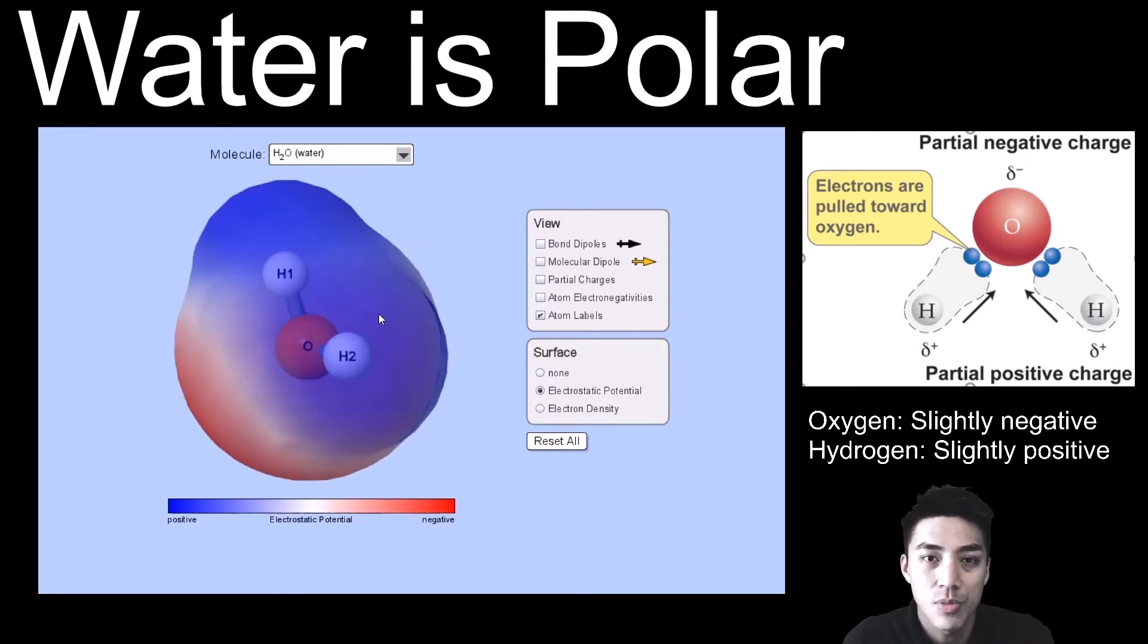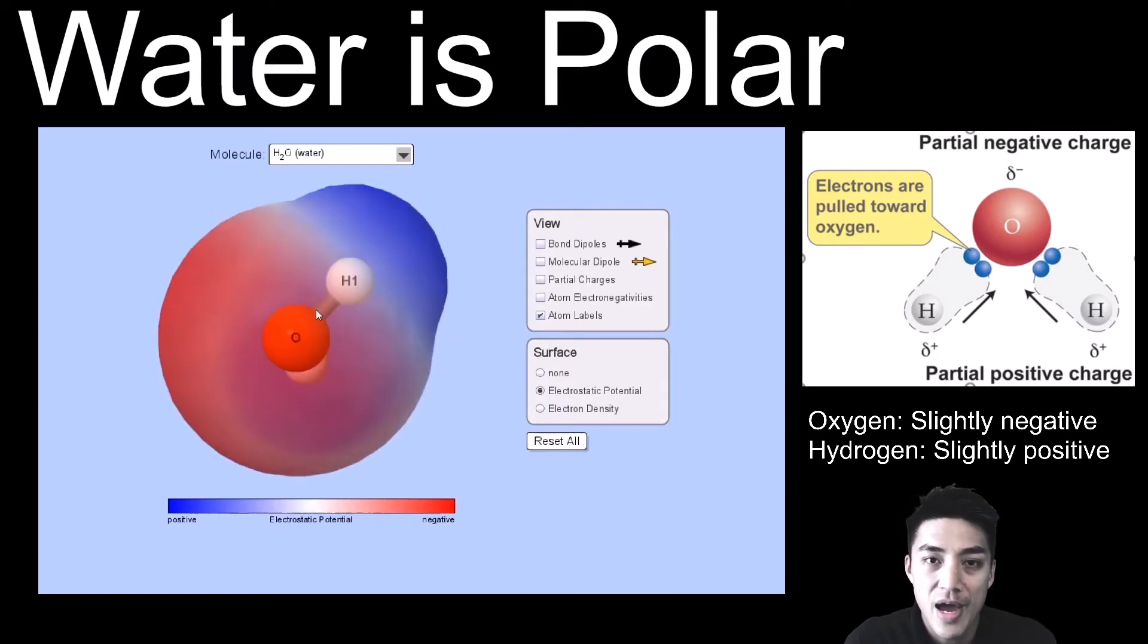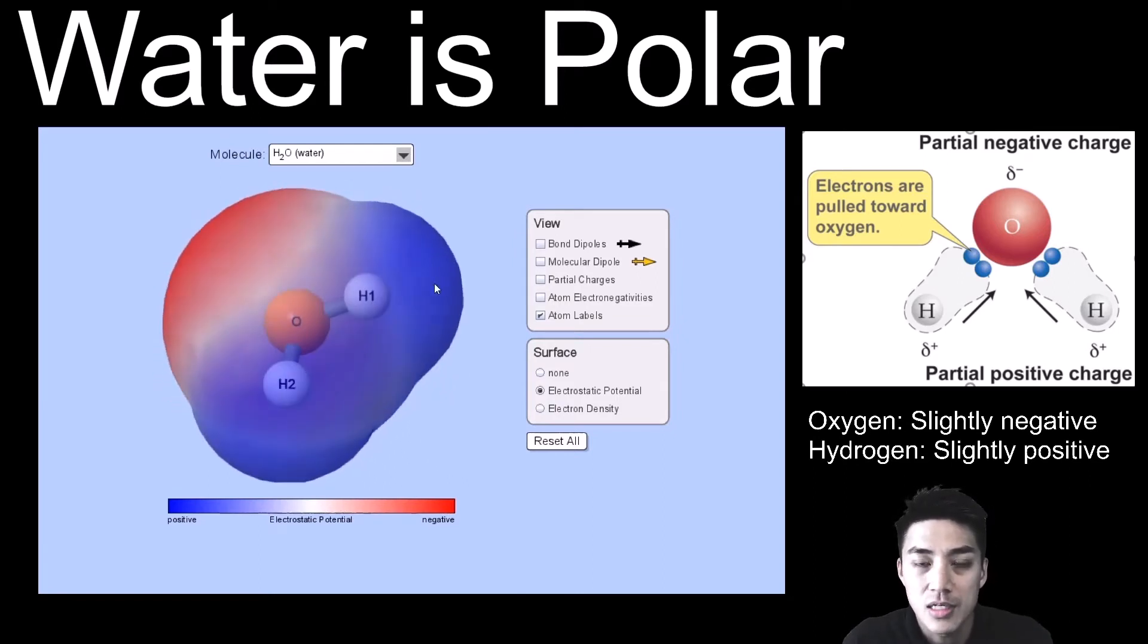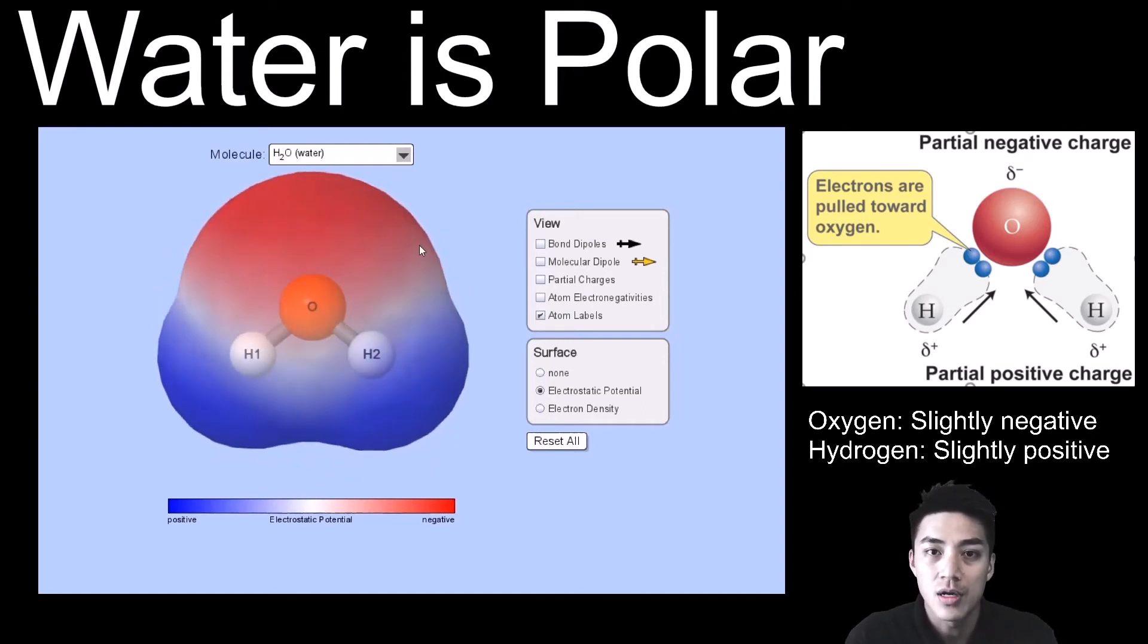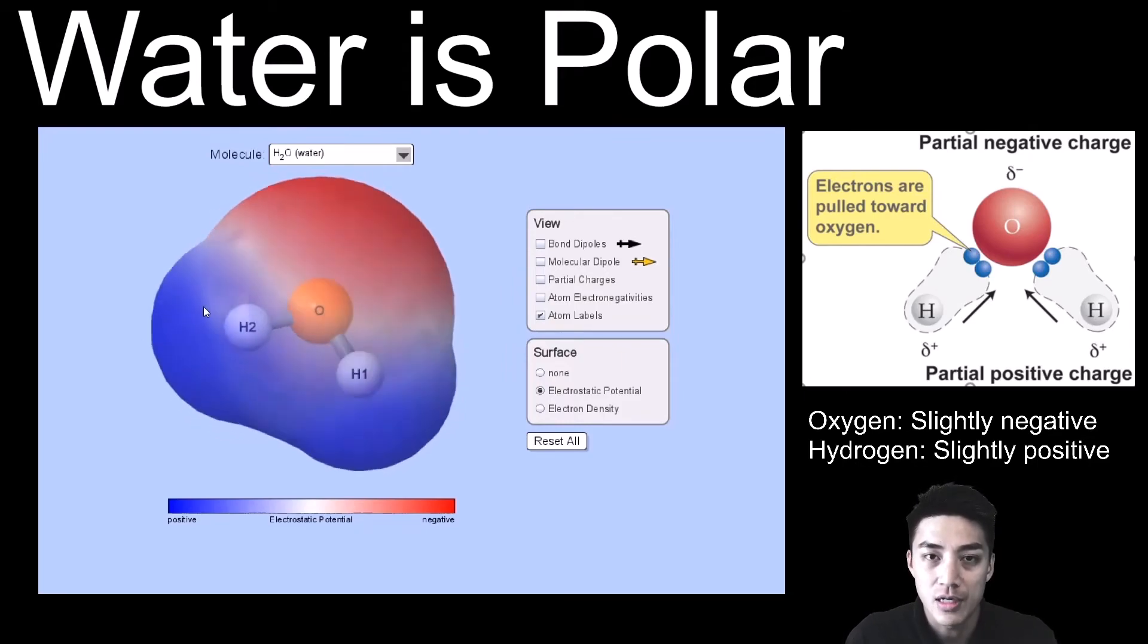It's kind of like north pole and south pole, or north and south on a magnet. It's just two different contrasting areas on the same molecule. And because they have this sort of effect, it gives water many of its special properties, all because of polarity.